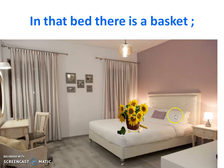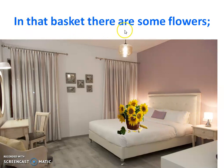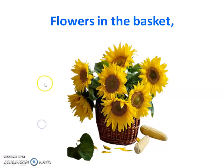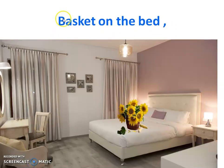In that bed, there is a basket. In that basket there are some flowers. Basket is bigger than flowers, so basket comes first, then flowers. The poet first moves from biggest to smallest — kingdom to flower. Now the poet goes in reverse sequence from small to big: flowers in the basket, basket on the bed. Bed is bigger and basket is smaller, so basket comes first, then bed.